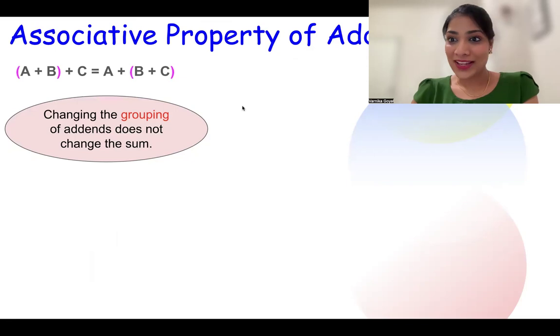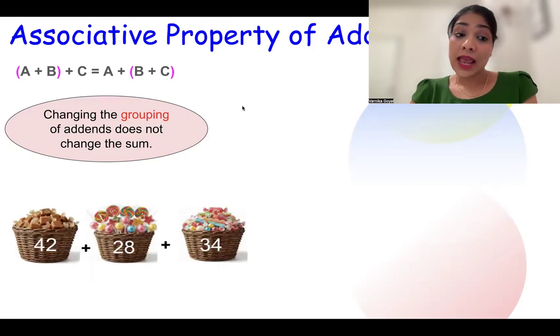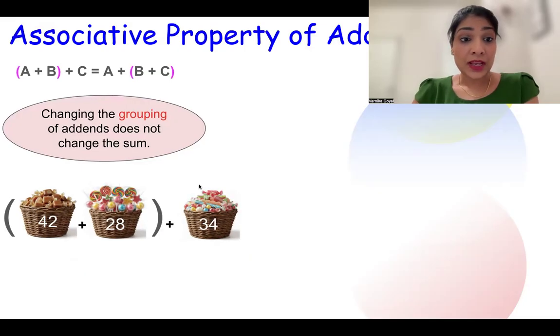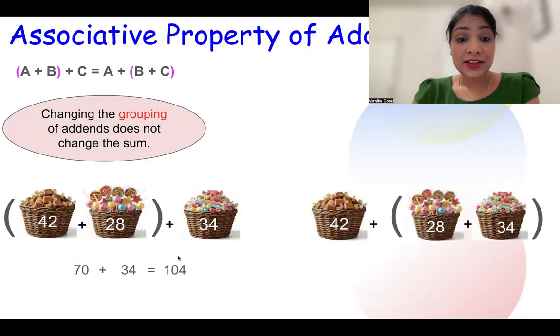Let's understand it more with one more example. Say I want to know what are the total number of chocolates. I have 42 toffees, 28 lollipops, and 34 candies. Let's do one thing. Let's make a group of toffees and lollipops first and then calculate the sum. So 42 + 28 is 70. Now let's calculate the sum with candies. So what do I get? 104 as total chocolates.